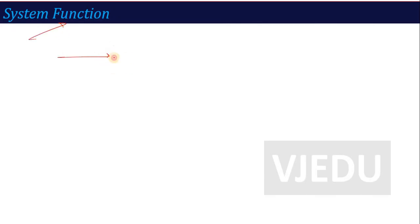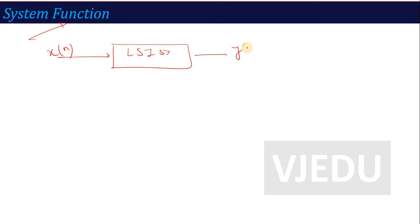So, system function — what is the system function? If you recall, we studied the LSI system, where our input is x(n) and our output is y(n), and the response of the system is defined as h(n). That is the impulse response. So impulse response is h(n), input is x(n), output is y(n).